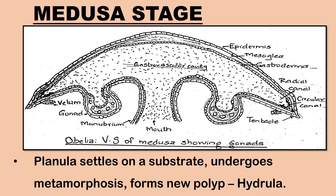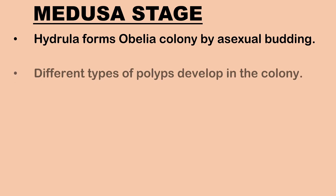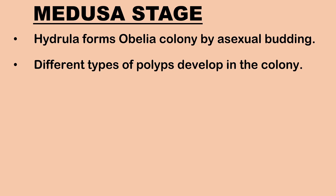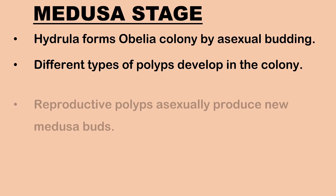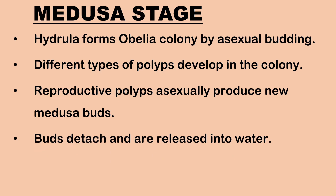The blastula undergoes gastrulation to form a solid gastrula, which develops into a free-swimming ciliated planula larva. The planula settles on a substrate and undergoes metamorphosis into a new polyp known as hydrula. Hydrula, by asexual budding, produces lateral buds which grow and form an Obelia colony. Different types of polyps — namely feeding polyps and reproductive polyps — develop in the colony. Reproductive polyps asexually produce new medusa buds, which get detached and are released into water.